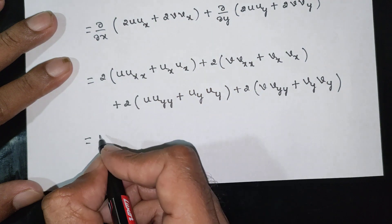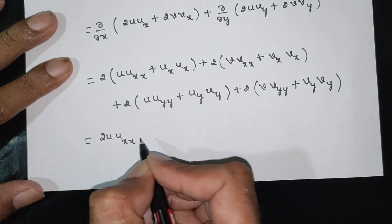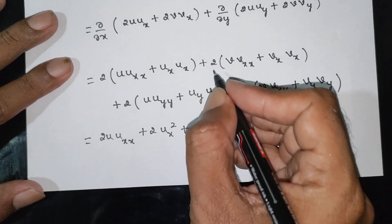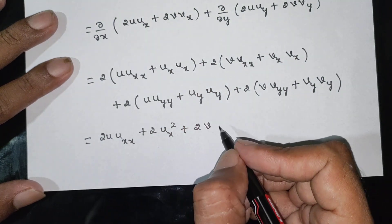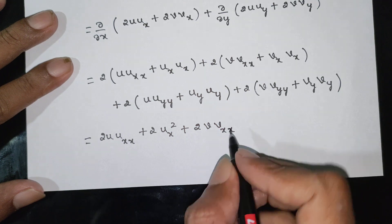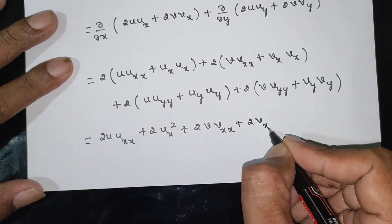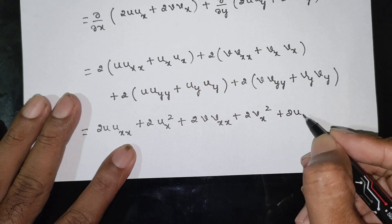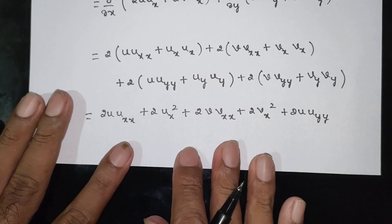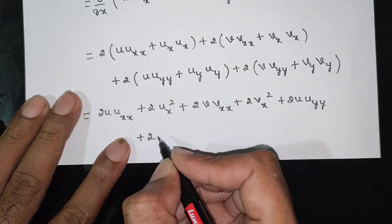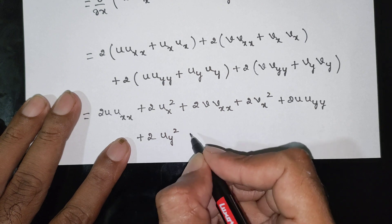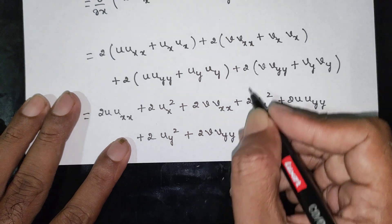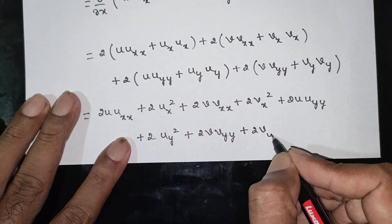After applying the second partial derivatives, we get: 2u·uxx + 2ux² + 2v·vxx + 2vx² + 2u·uyy + 2uy² + 2v·vyy + 2vy².